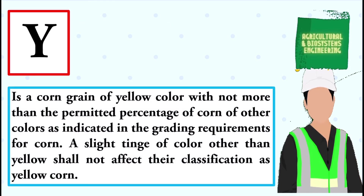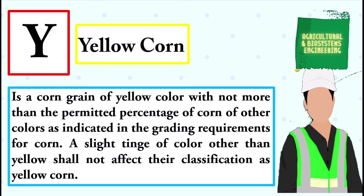Is a corn grain of yellow color with not more than the permitted percentage of corn of other colors as indicated in the grading requirements for corn. A slight tinge of color other than yellow shall not affect their classification as yellow corn. The answer is yellow corn.